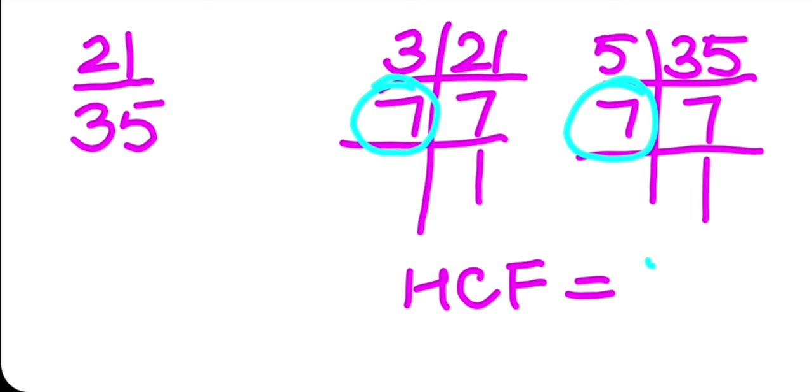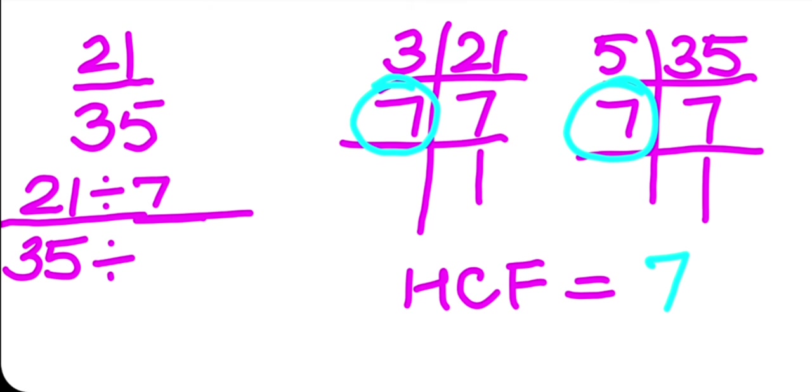Now I will divide the given fraction with the HCF, that is seven, numerator and denominator both. So 21 divided by 7 and 35 divided by 7. So 21 divided by 7 is 3, and 35 divided by 7 is 5.